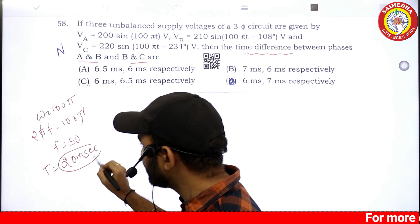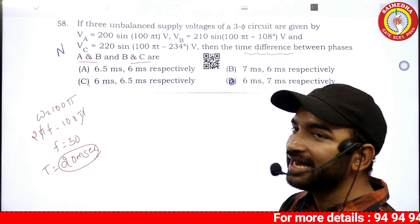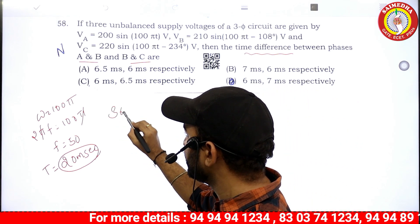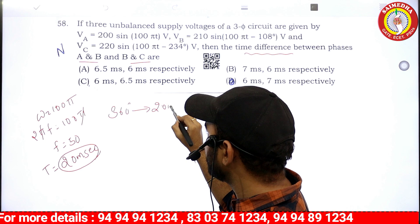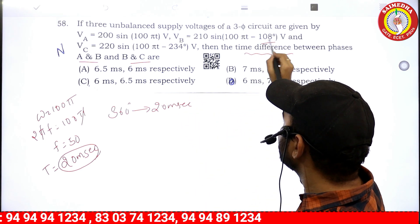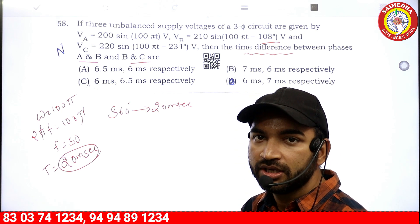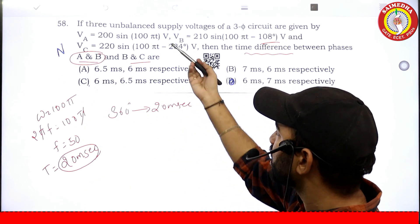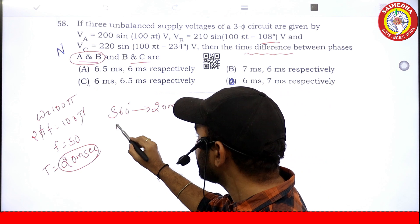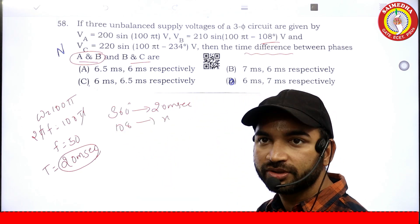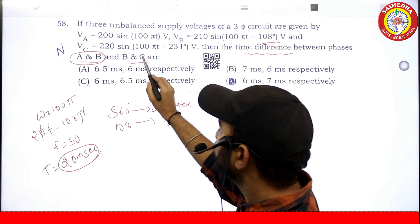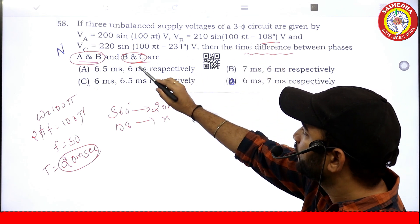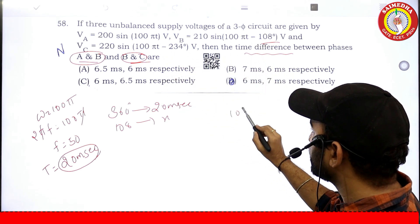One waveform is 360 degrees, corresponding to 20 milliseconds. The angle difference is 108 degrees. For waveforms B and C, the angles are 108 and 234 respectively. The phase difference between B and C is 234 minus 108.